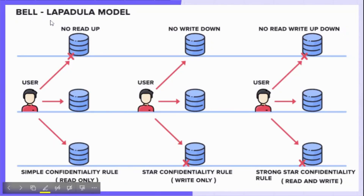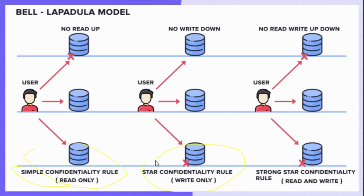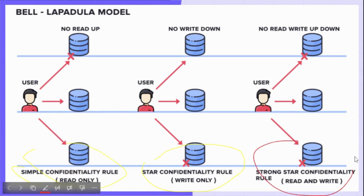In this model there are three parts. The first part is the Simple Security Rule, the second part is the Star Property Rule, and the third part is the Strong Star Property Rule.